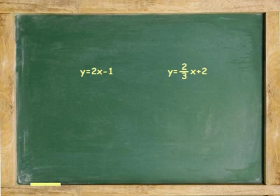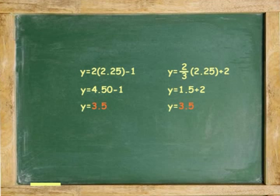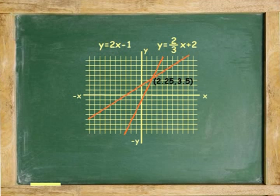Now to find the y value of the equation, go back to either of the two original equations. Substitute the value of x and get the value for y. Multiply the parenthesis. Subtract. The exact points where the lines cross is 2.25, 3.5.